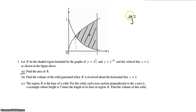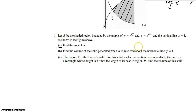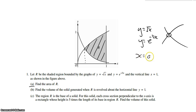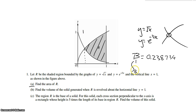Put Y equals square root of X and Y equals e to the negative 3X into the calculator and find the intercept. It should come out to be X equals 0.238734. We're going to set this as the B value — B equals 0.238734. Store this number to any letter, then set up the integral from B to 1, because you go from B to 1.